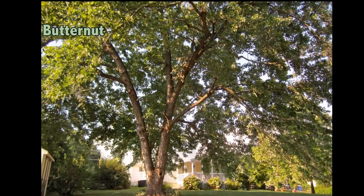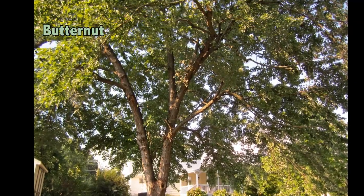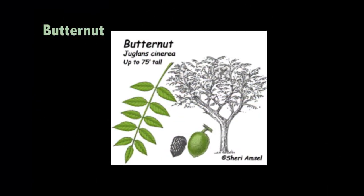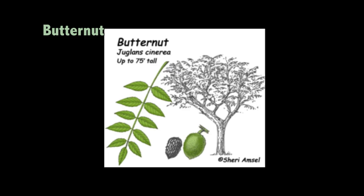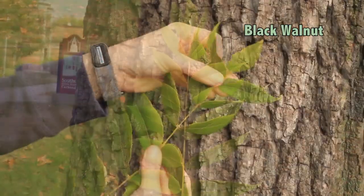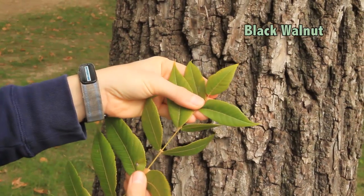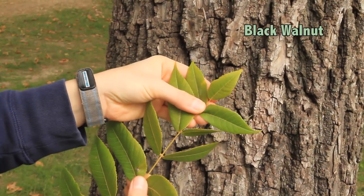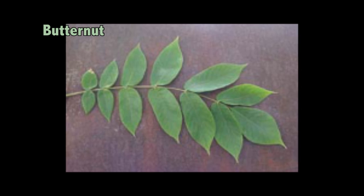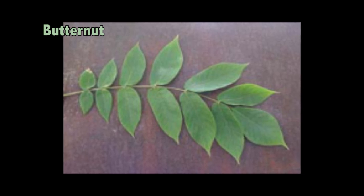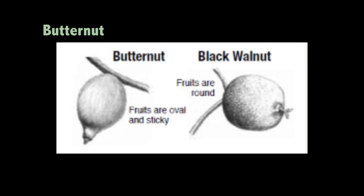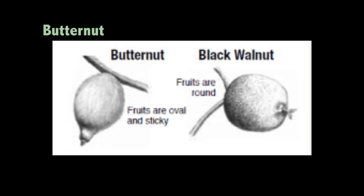Butternut trees look very similar to black walnut trees, but are not often found anymore due to the disease of butternut canker. Unlike black walnut, where the terminal leaflet is often absent or smaller, butternut's terminal leaflets will be similar in size to the other leaflets. The butternut fruit is similar to black walnut fruit but is shaped more like a football and is not quite as round.